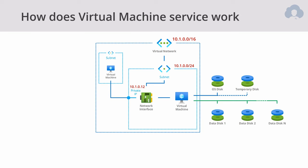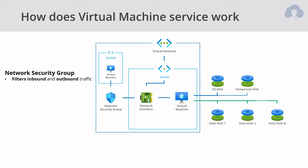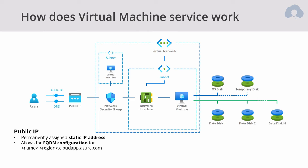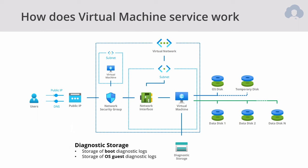Another important element is the Network Security Group. It's a logical object that allows you to filter all traffic to that virtual machine, either outbound or inbound, and allows you to create rules to filter that traffic effectively. Additionally, you can create a public IP for your virtual machine, which allows you to connect from outside your network. You can also assign an FQDN name for that virtual machine if you want to. Lastly, you have diagnostic storage — this is where you store your boot and OS diagnostic logs. If you have any issues starting virtual machines, this is the place to look. It is a standard storage account in Azure.